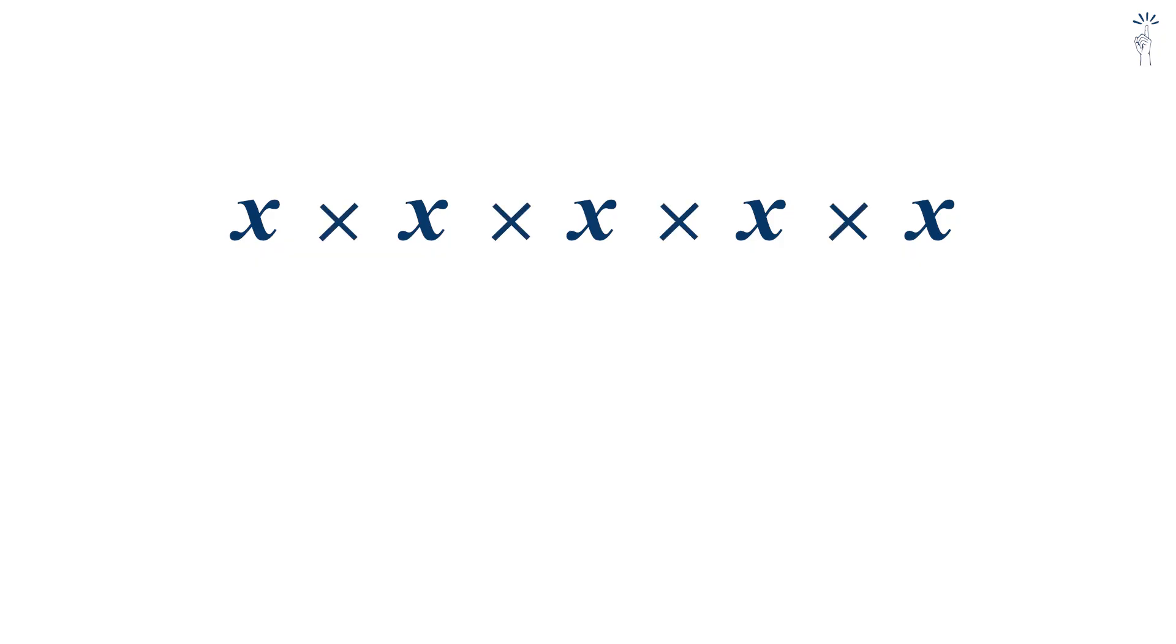Suppose we have this expression. The variable x is the base and it's multiplied by itself five times. In exponential form, we'll write it as x to the power of five.